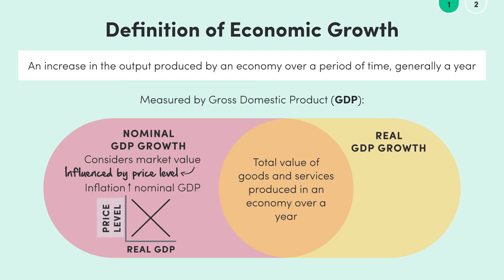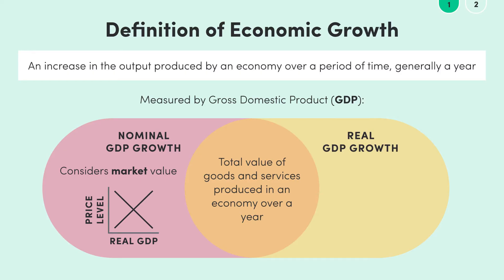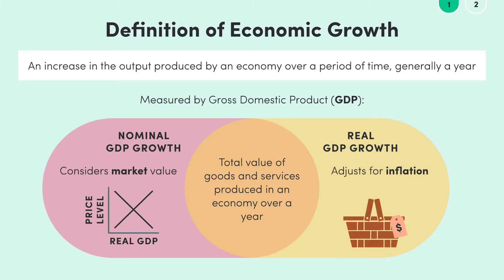So if we look solely at changes in nominal GDP, we might think that output has increased — that is, economic growth has increased — when in fact it's just the price level that has risen. This is where real GDP comes in. Real GDP still measures the total value of goods and services made within the economy, but adjusts this figure for inflation, giving a much more accurate depiction of movements in an economy's production.